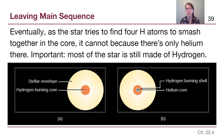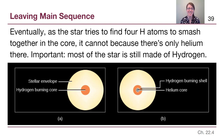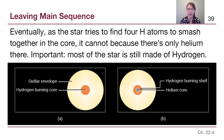Stars leave the main sequence when they run out of hydrogen to turn into helium in their core. It is still extremely important to remember that most of the star is still made of hydrogen. In this set of images, the light yellow color in both part A and part B is still the stellar envelope, which is 75% hydrogen and will never be part of the fusion process.